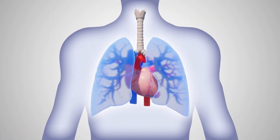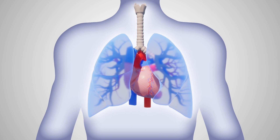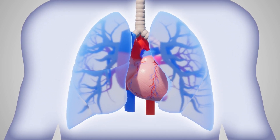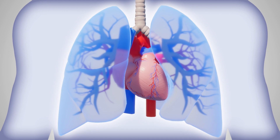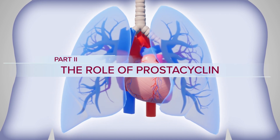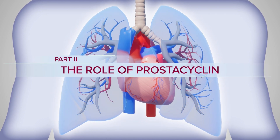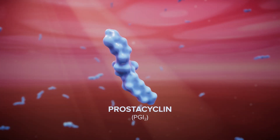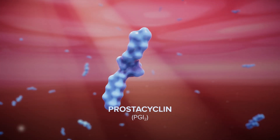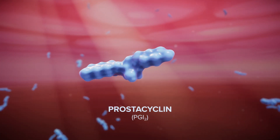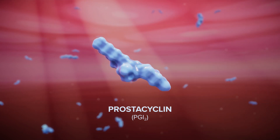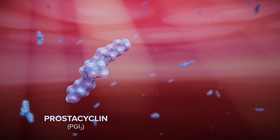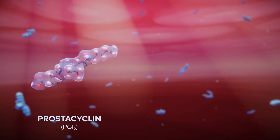Fortunately, with decades of research and clinical experience, the role of various disease mediators has been elucidated, particularly the role of prostacyclin. PAH is characterized by abnormally low levels of prostacyclin, or PGI2, an endogenous, naturally occurring metabolite of arachidonic acid. Prostacyclin carries out several important actions to help improve heart and lung function.